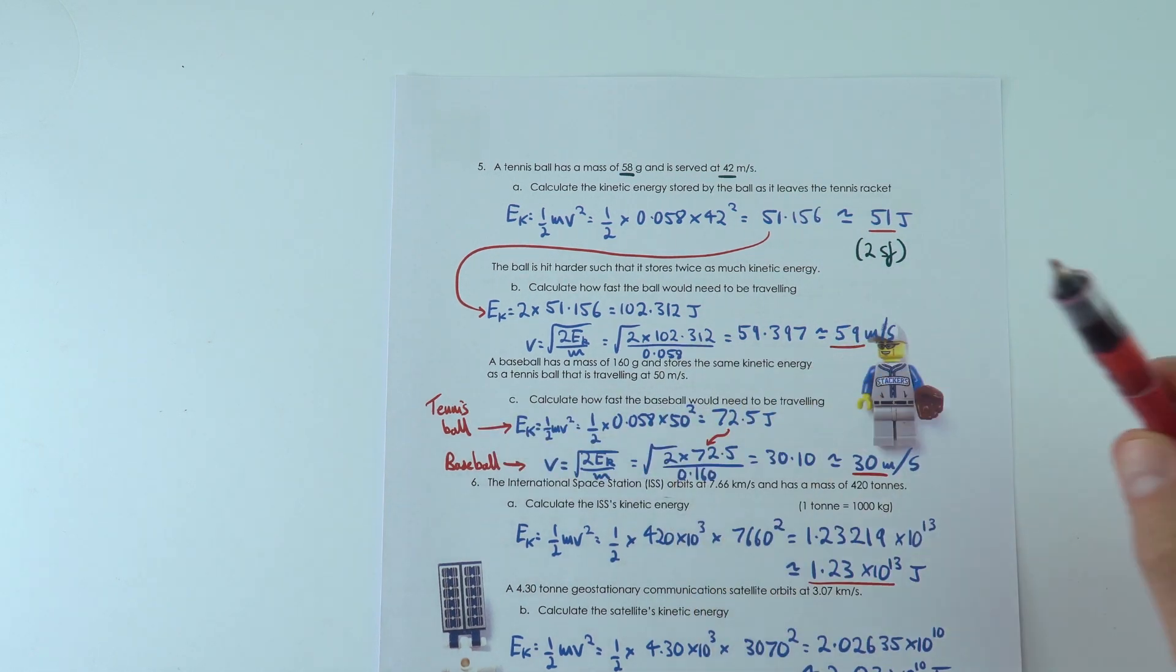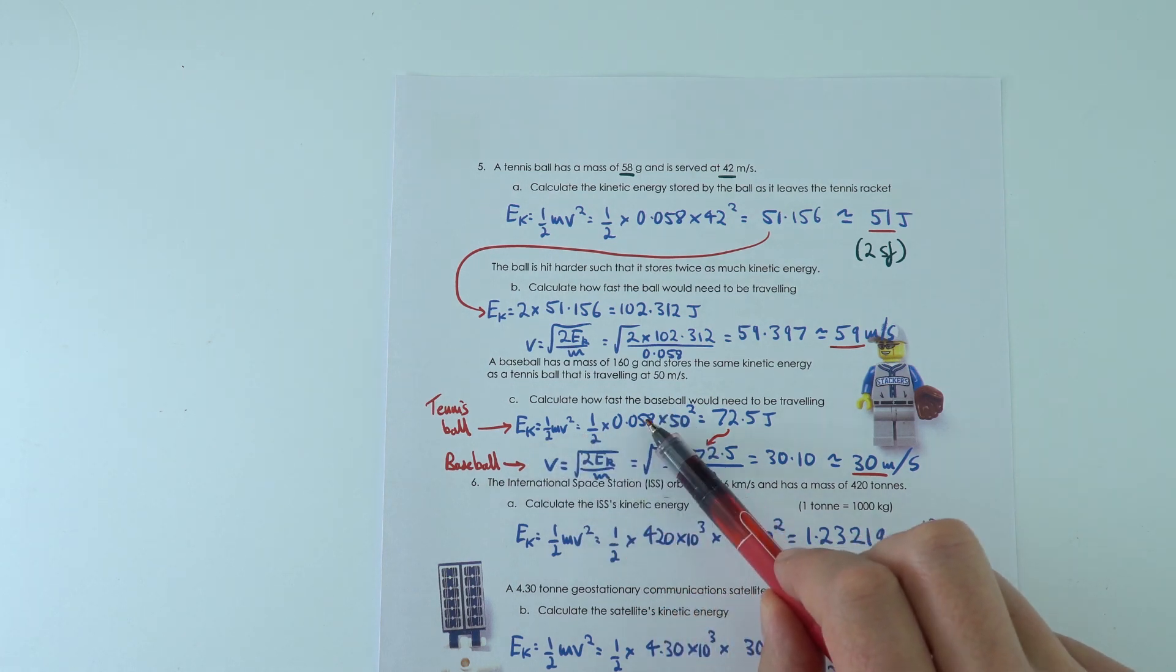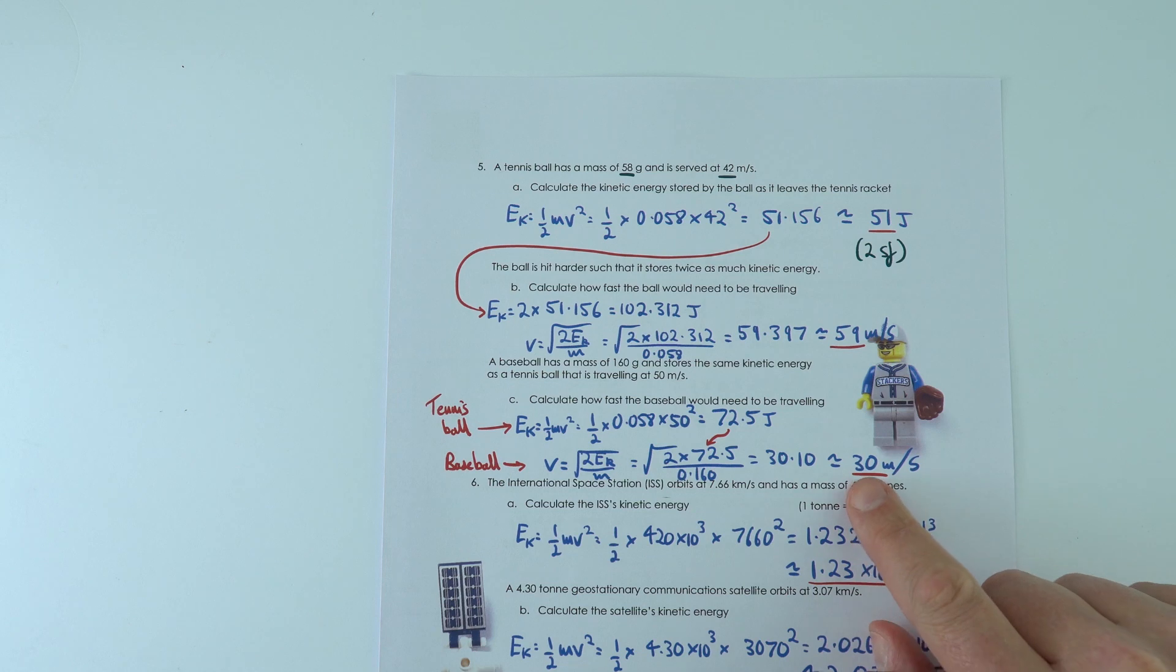And then when we looked at the tennis ball compared to the baseball, again I just looked at the kinetic energy of the tennis ball. I used this value in this equation to get the final speed of that baseball as 30 meters per second.